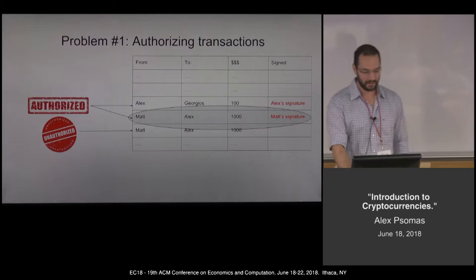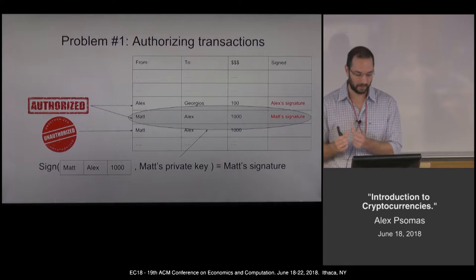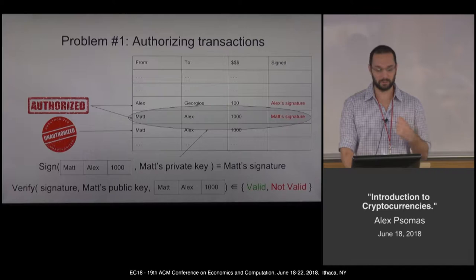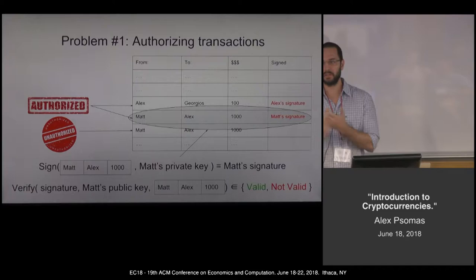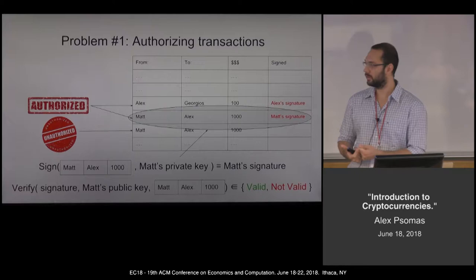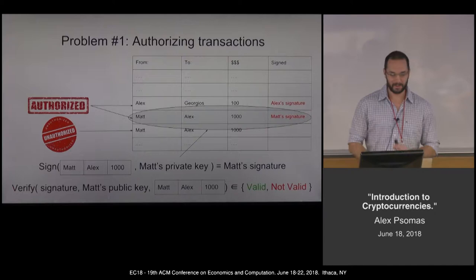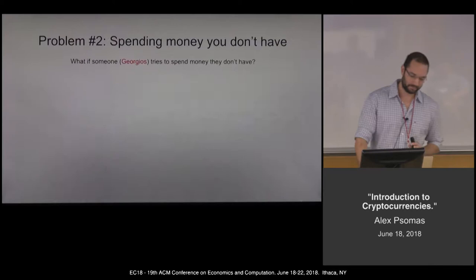To be clear about how signing works in the crypto world: there's a known function, 'sign', that takes as input something like 'Matt gave Alex a thousand bucks' and Matt's private key — that only Matt knows — and outputs Matt's signature. This is an operation only Matt can do. And there's a public function, 'verify', that takes as input a signature, a public key, and the transaction, and tells you if this transaction was signed using that signature. This is something everyone can do — anyone can check, without knowing Matt's private key, if Matt's signature is valid. It's basic cryptography. If you believe in cryptography, you won't have a problem with it. Problem number one: solved.